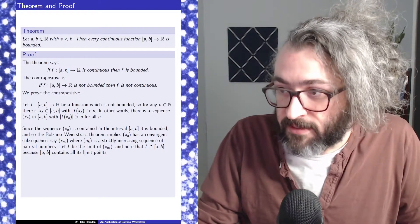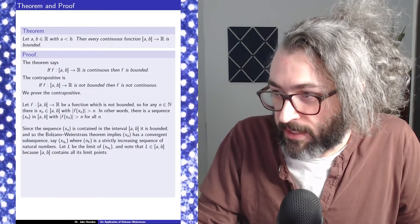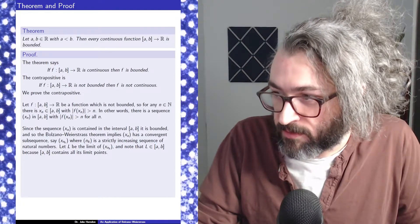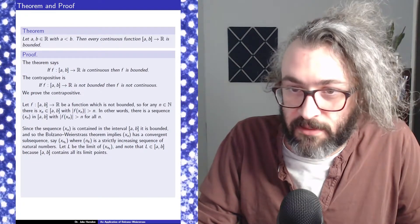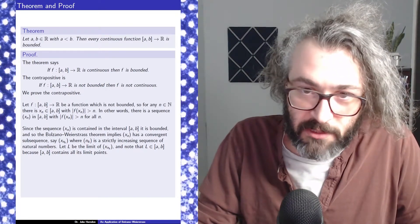So this subsequence has a limit. That's the point. It's a convergent subsequence. So let l be the limit of the subsequence. And then note that l is in the closed interval because the closed interval contains all its limit points.